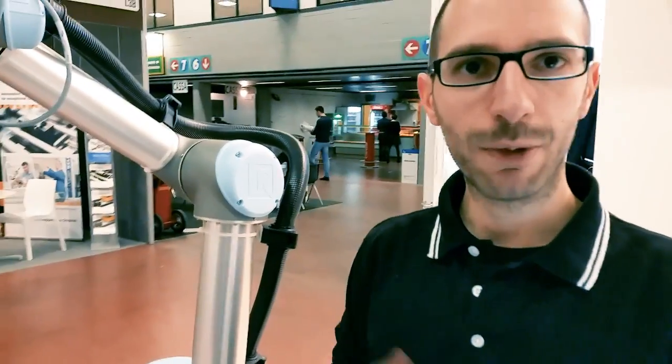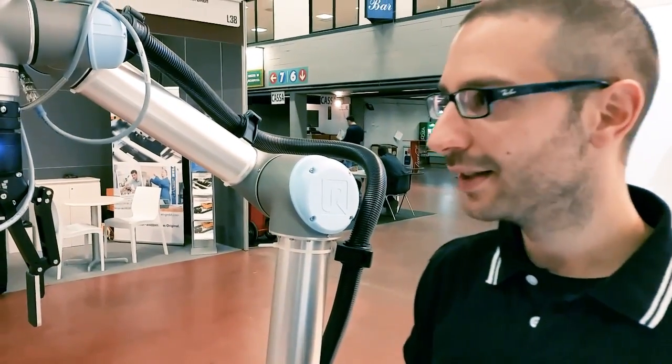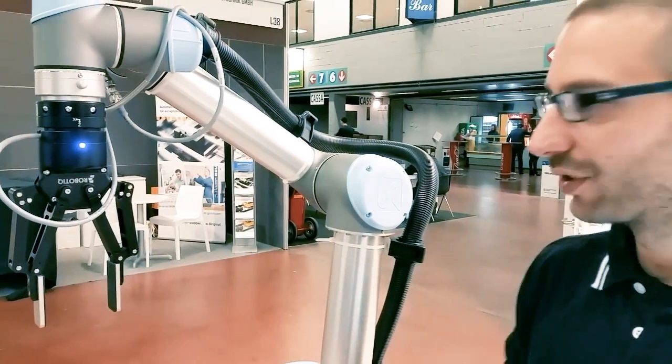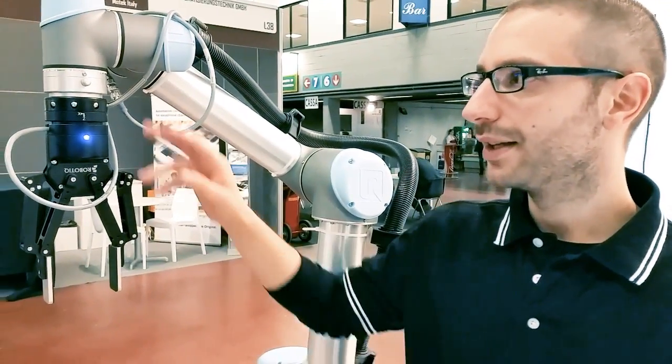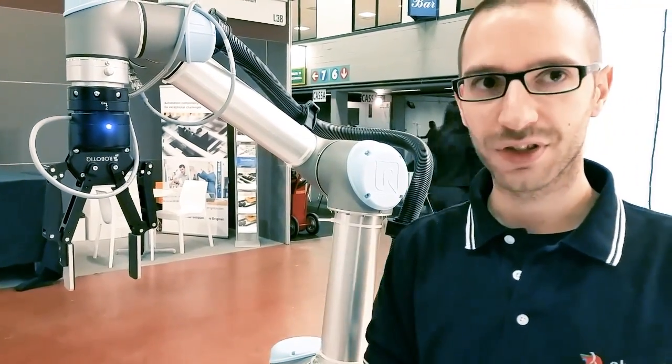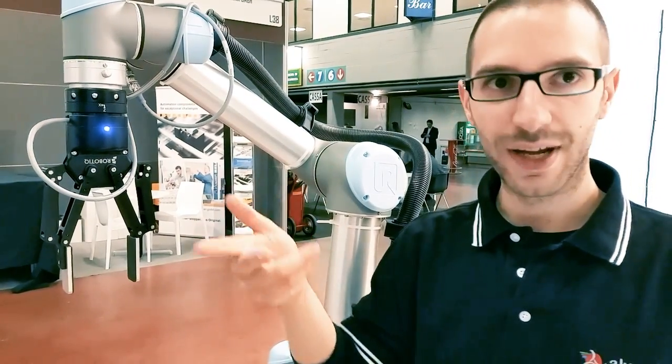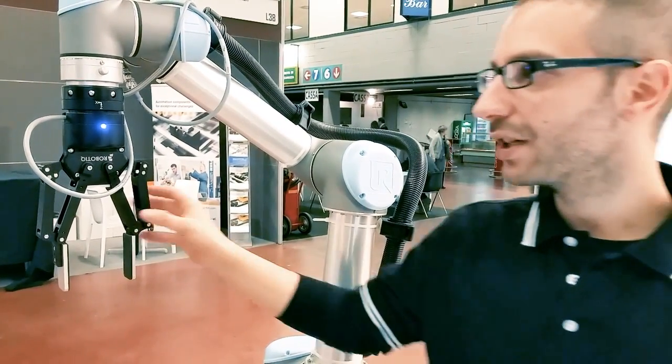I'll show you the demo that we prepared for MECSPE 2016, in which we use the Cobot UR5 from Universal Robots, the 6-axis sensor which detects force and torque applied on the 3-axis, and the robotic gripper, both from the Robotiq company.